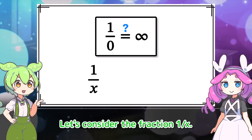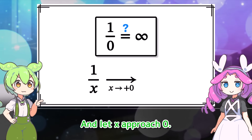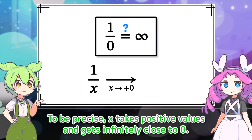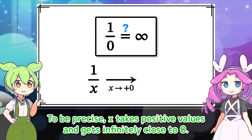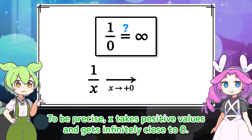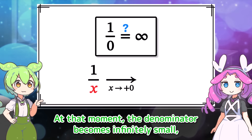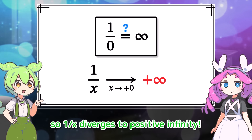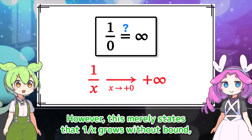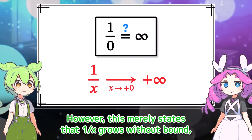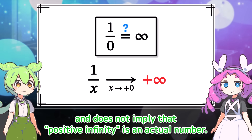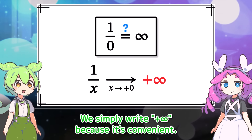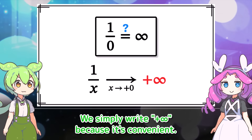What do you mean? Let's consider the fraction 1 over x, and let x approach 0. To be precise, x takes positive values and gets infinitely close to 0. At that moment, the denominator becomes infinitely small, so 1 over x diverges to positive infinity. However, this merely states that 1 over x grows without bound and does not imply that positive infinity is an actual number.